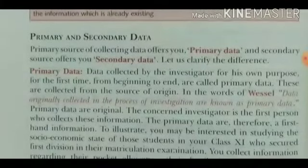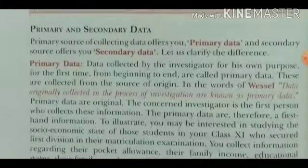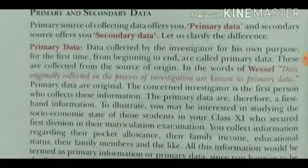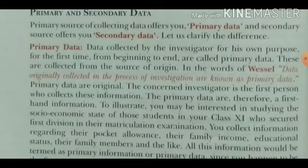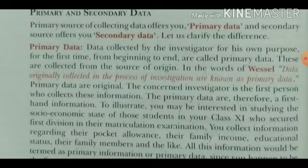Now we will try to differentiate between primary and secondary data. Primary data is the data collected by the investigator for his own purpose for the first time, from beginning to end. Those are collected from the source of origin. Data originally collected in the process of investigation are known as primary data.